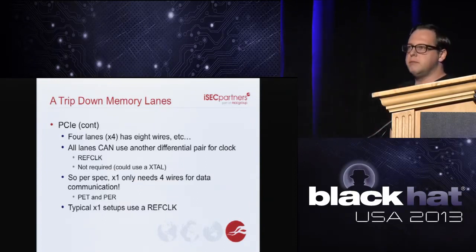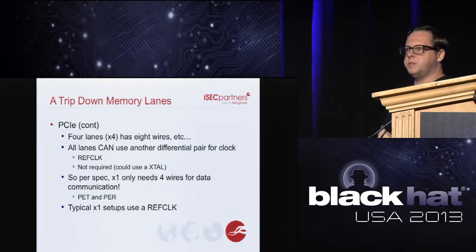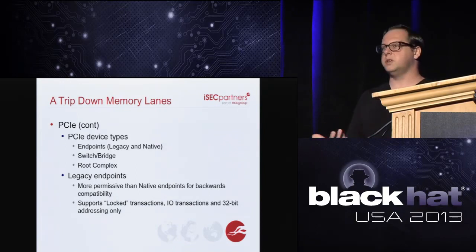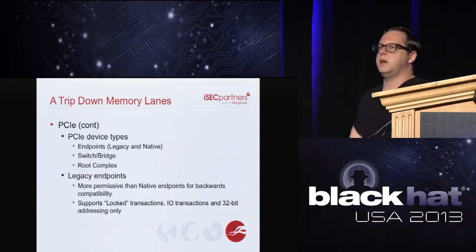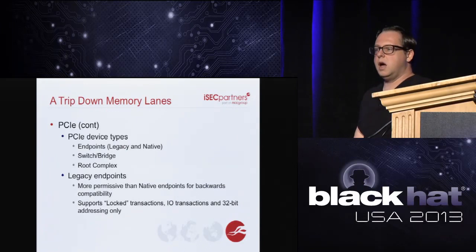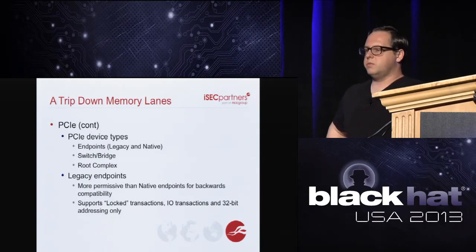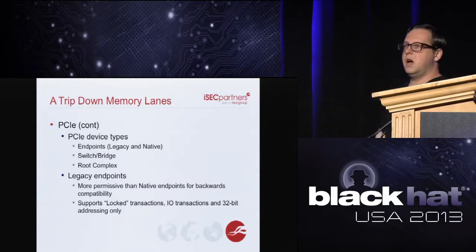Most manufacturers use six wires because it's easier to include a reference clock for stability. Different device types include endpoints, switches, bridges, and the root complex. Legacy endpoints allow I/O reads and writes, memory reads and writes, and locked transactions — locking the bus so no other device can use it. Native endpoints use 64-bit addressing with some memory location restrictions. Data is sent over packets called Transaction Layer Packets (TLPs), analogous to TCP/IP, using a point-to-point topology with no bus arbitration.